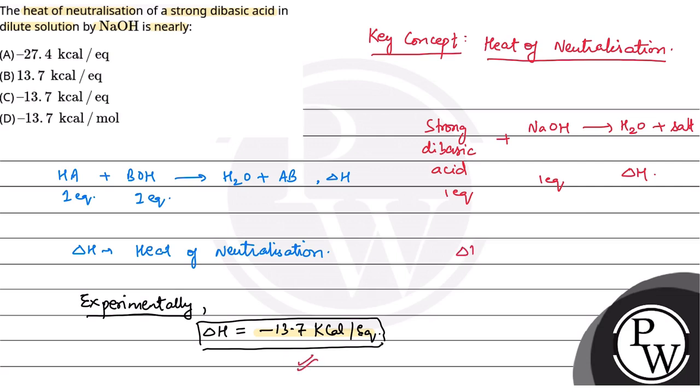So in this case, what happens? Our heat of neutralization will be minus 13.7 kcal per equivalent. We see heat of neutralization per equivalent, not per mole. So the correct option to this question will be option number C, minus 13.7 kcal per equivalent.